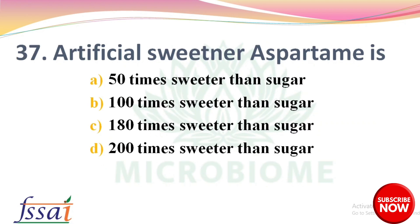Next question: the artificial sweetener aspartame is — options: 50 times sweeter than sugar, 100 times sweeter than sugar, 180 times sweeter than sugar, 200 times sweeter than sugar. The right answer is option C, 180 times sweeter than sugar.